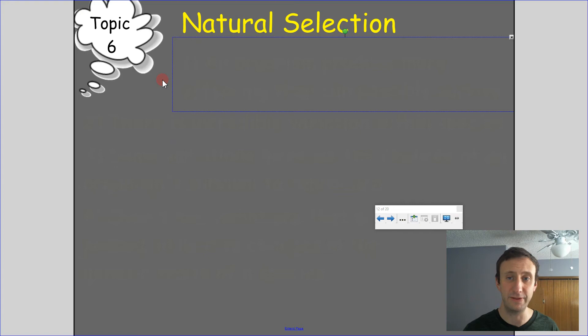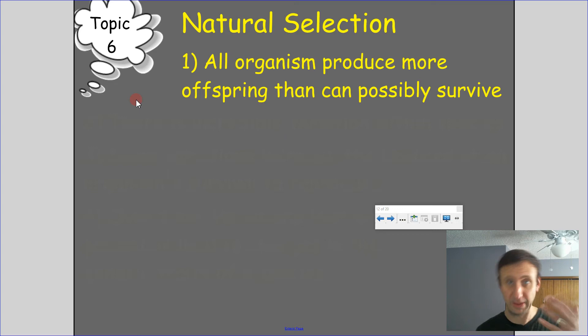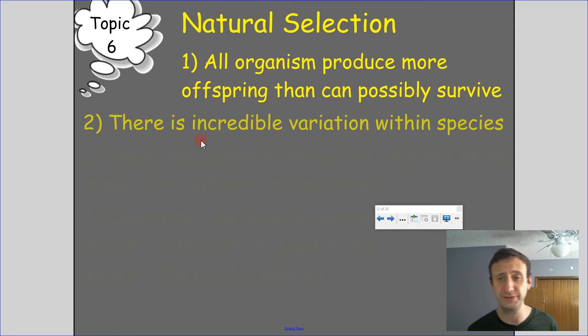Here are the main points of natural selection — important for you to know. Point one: all organisms produce more offspring than could possibly survive. Animals, plants, whatever organism we're dealing with, produces more offspring than will typically survive.